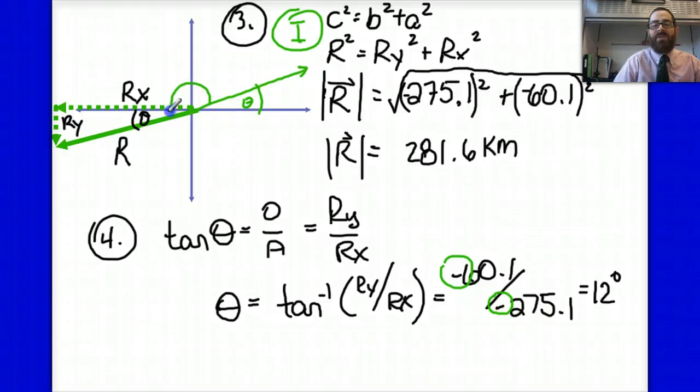You need to then recognize that it's not 12 degrees, but it's 180 degrees plus 12 degrees. So our actual angle here, theta, will be 180 plus 12, or 192 degrees.